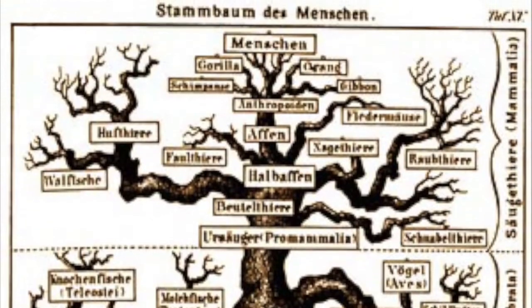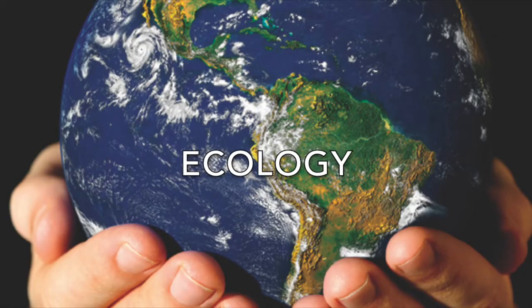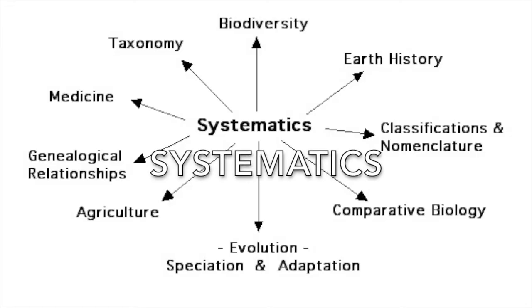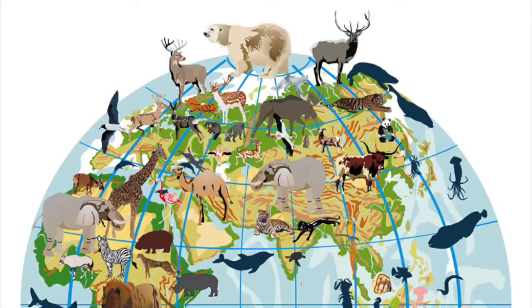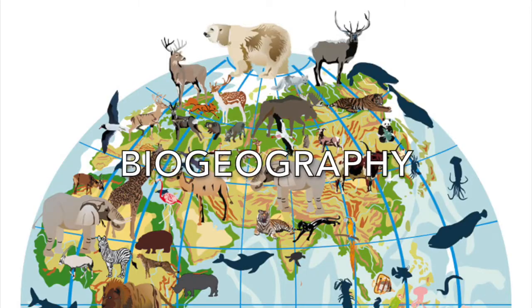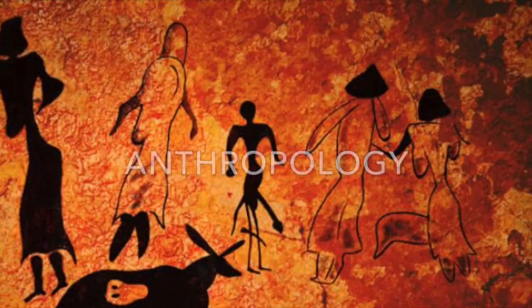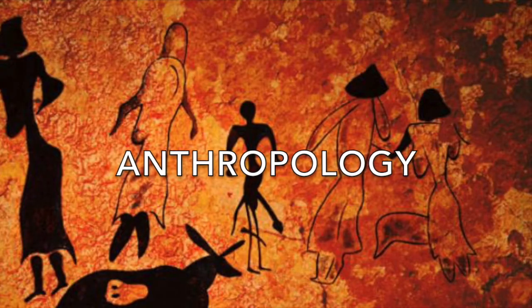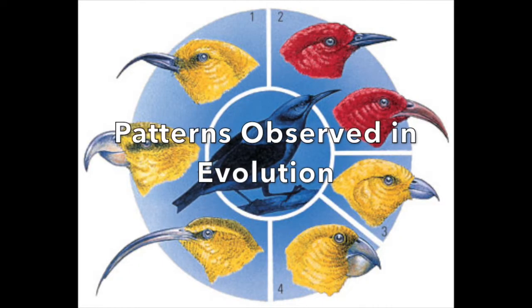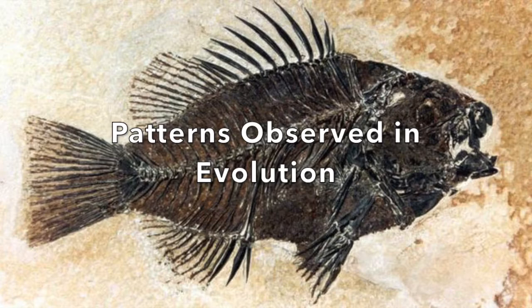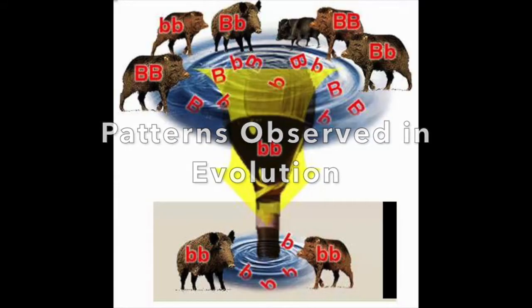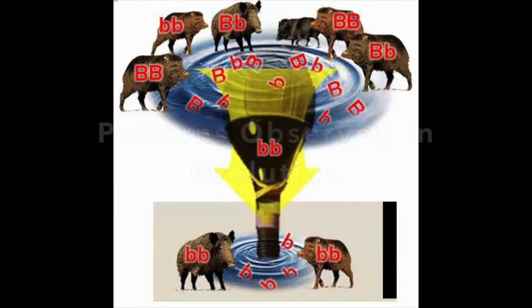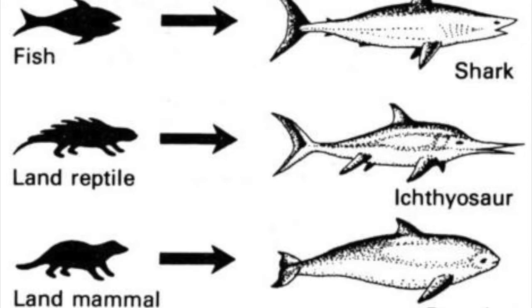These branches include genetics, ecology, systematics, paleontology, embryology, biogeography, molecular biology, and anthropology. This evidence helps to establish patterns, trends, and discrepancies to gain a better understanding of how changes in species occurred and unrolled the book of life.